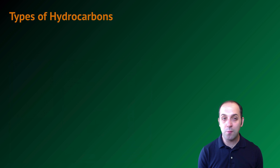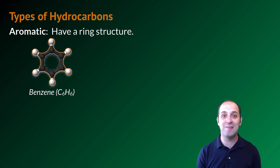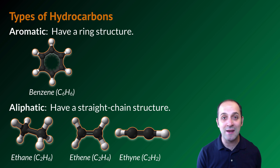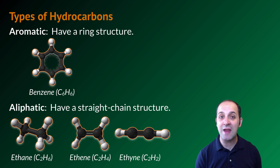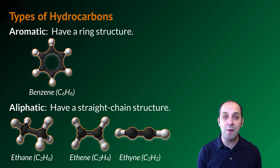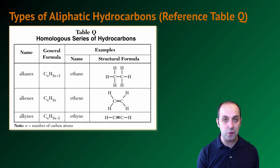When looking at different types of hydrocarbons, we break them into two major groups. We have aromatic hydrocarbons, which have a ring structure — benzene is a good example. Then we have aliphatic hydrocarbons, where the carbons are connected in a chain rather than a ring. Examples include ethane, ethene, and ethyne. You don't need to focus too much on aromatic hydrocarbons in this course — save that for college-level organic chemistry — but you absolutely need to pay attention to the aliphatic hydrocarbons. You have a reference table (Table Q) that deals with them, covering alkanes, alkenes, and alkynes.